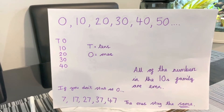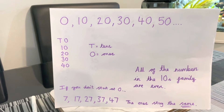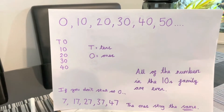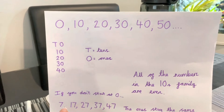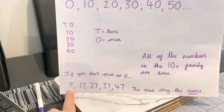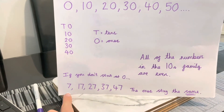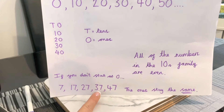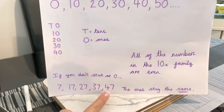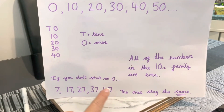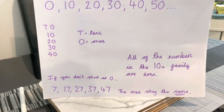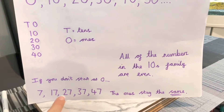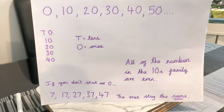But in year two we do count in tens but not starting from zero. So if you start from a random number, say seven, it will go seven, seventeen, twenty-seven, thirty-seven, forty-seven. And the thing to know here is that the ones stay the same. So in the ones column we have seven in all of those numbers.